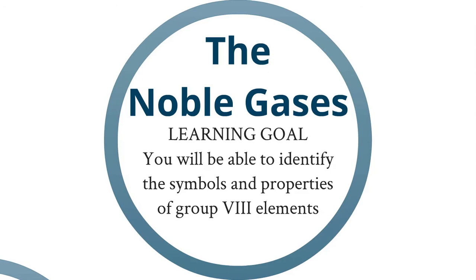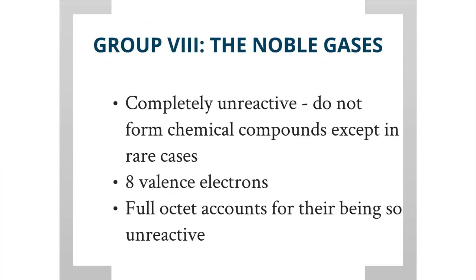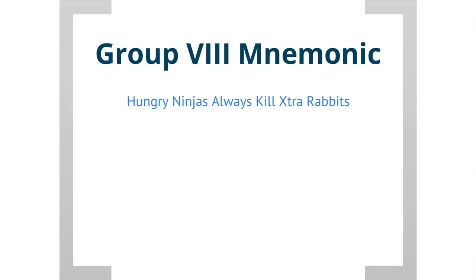You will be able to identify the symbols and properties of group 8 elements. The group 8 elements are the noble gases. The noble gases are completely unreactive — they do not form chemical compounds, except in very rare cases. The noble gases have eight valence electrons, and since they have that full octet of eight valence electrons, that is the reason why they are so unreactive. The mnemonic for group 8 is: 'Hungry Ninjas Always Kill Extra Rabbits.'